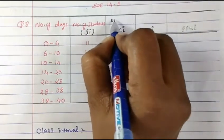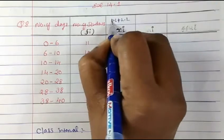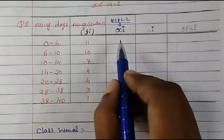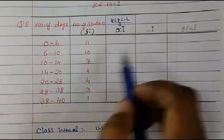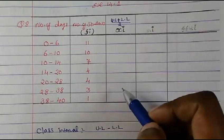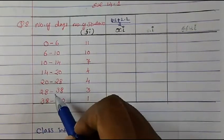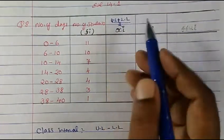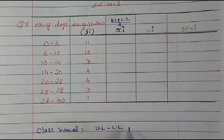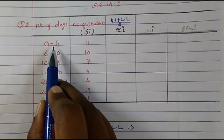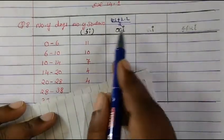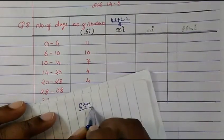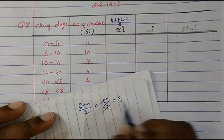For the direct method, we first need to find xi, the midpoint. xi = (upper limit + lower limit) / 2. Since the class intervals differ, we must calculate each xi individually. For the first class 0 to 6: (6 + 0) / 2 = 6/2 = 3.